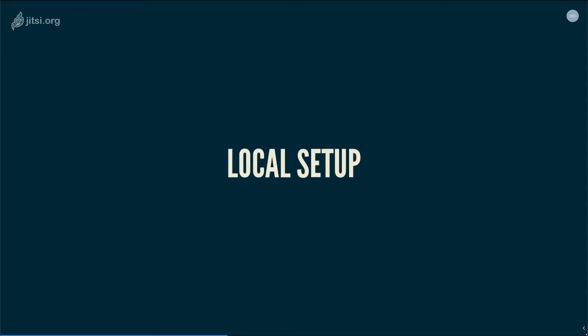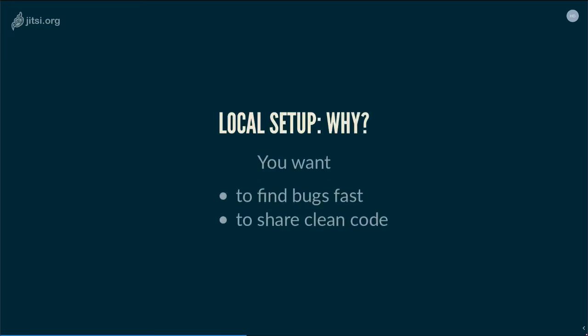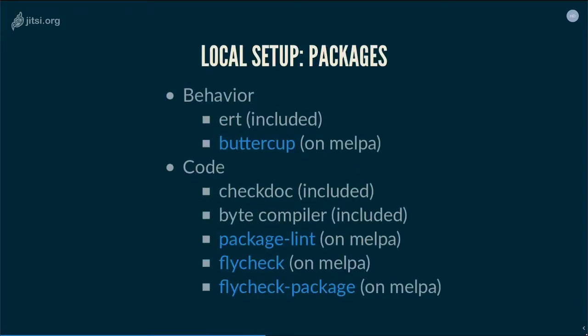So what's the local setup? I'll talk about how to configure your computer so you can check quality while you write code. Why do you want to set up your computer to check quality problems? You want to find bugs fast while you type, and you also want to share clean code. There are two important things: quality of behavior and quality of code. For quality of behavior, you have two frameworks: ERT, which is included inside Emacs, and Buttercup, which is available on MELPA.